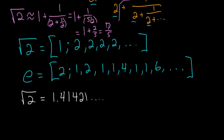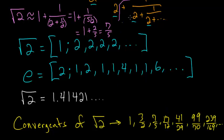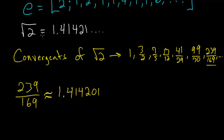This number is what we would call a convergent of the square root of 2 — each step where we could cut off the continued fraction gives us a convergent once we simplify it. The convergents of the square root of 2 are 1, 3 halves, 7 fifths, 17 twelfths, and so on. The further down we cut off this continued fraction, the better these convergents approximate the square root of 2. For example, 239 divided by 169, written as a decimal, is approximately 1.414201 — very close to the square root of 2, differing only in later decimal places.